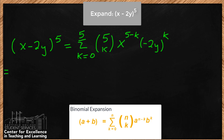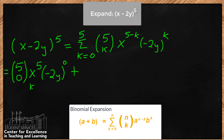For k=0, we have the binomial coefficient 5 choose 0, and x to the fifth power because it's 5 minus 0. Then we have negative 2y to the zero power, so there's not actually anything there — in the final expression there won't be any negative 2y. It'll just be x to the 5. Then we put our plus sign and move on. This was when k was 0.